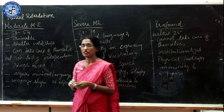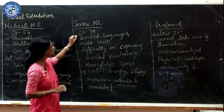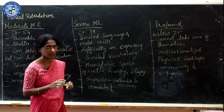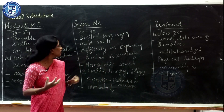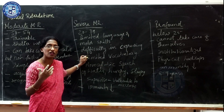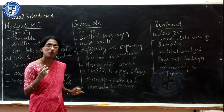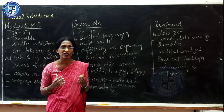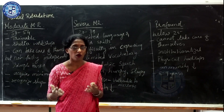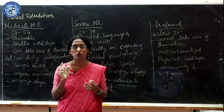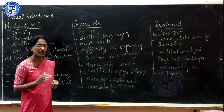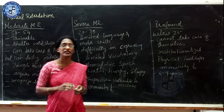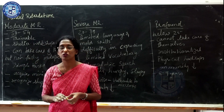Severe mental retardation involves an IQ of around 20 to 39. These individuals have limited language and motor skills and develop a limited vocabulary, causing difficulty in expressing themselves and communicating with others. They develop monosyllabic speech — using one word instead of a full sentence, for example saying 'water' or 'sleepy.' Their immunity is very low and they need supervision even while doing simple tasks, as they are vulnerable to accidents.